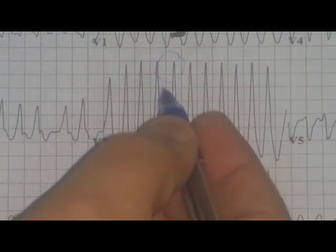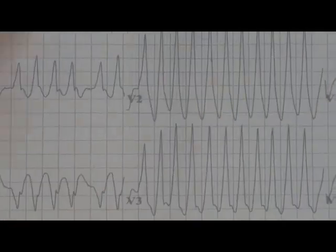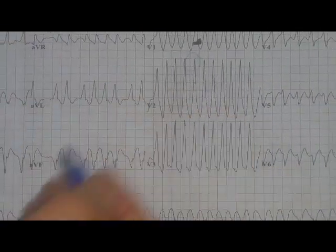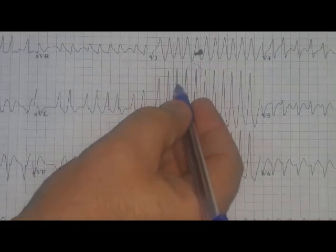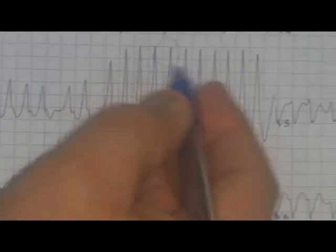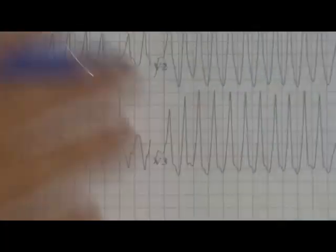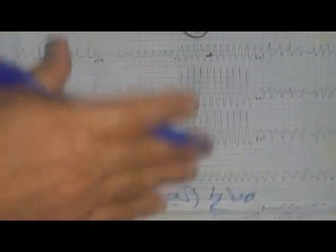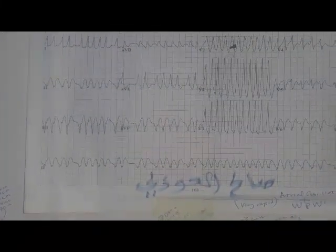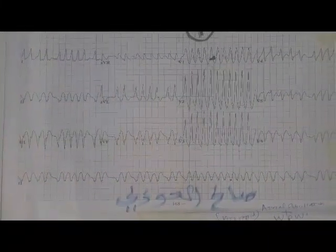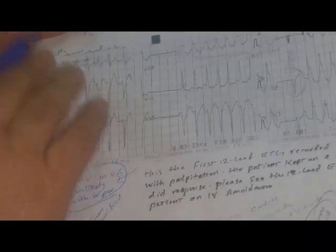Because it's going through the accessory pathway, during that the QRS complex is very narrow during the fast rate. That differentiates this rhythm from another re-entry ventricular tachycardia similar to verapamil-sensitive ventricular tachycardia. When we face this case, we're confused with WPW syndrome and atrial fibrillation.